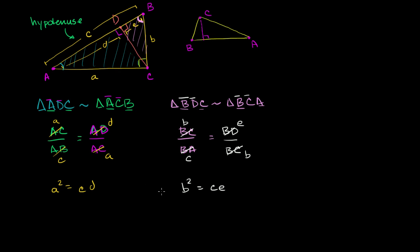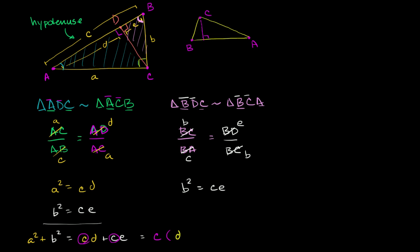Now we can add the two results. We have a² = cd and b² = ce, so adding the left-hand sides: a² + b² = cd + ce. We can factor out c on the right: a² + b² = c(d + e). Since d and e together make up the full hypotenuse, d + e equals c. So we get a² + b² = c times c, which is c².